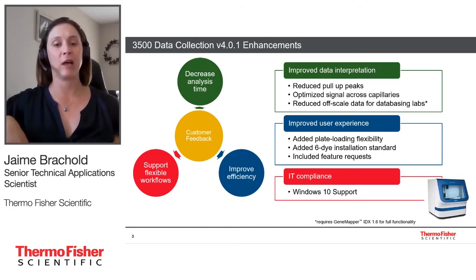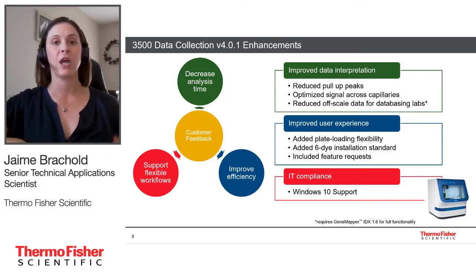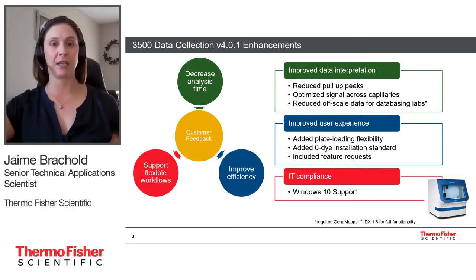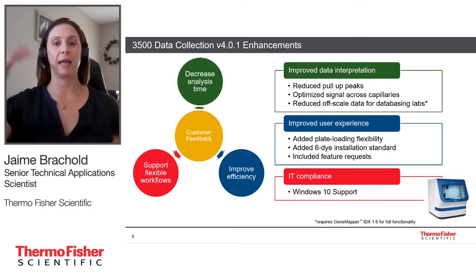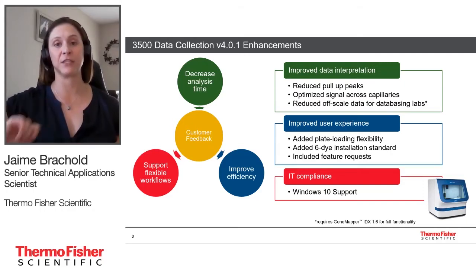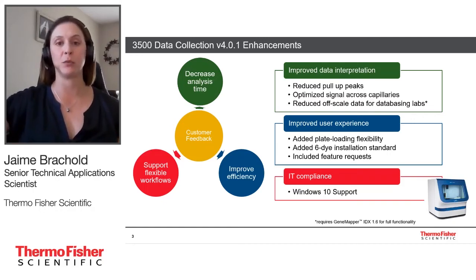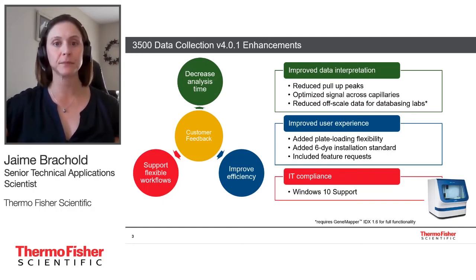Off-scale data recovery lifts the cap off the top end of the dynamic range. Currently your data is capped around 32,000, but if you're running with off-scale data recovery, that cap is lifted up to about 65,000. You will also see pull-up related to off-scale peaks reduced. GeneMapper IDX version 1.6 is required for full functionality — it's only in version 1.6 that you'll see that cap lifted to 65,000. In earlier versions of IDX, you will still see reduced pull-up, but you won't see that cap lifted.